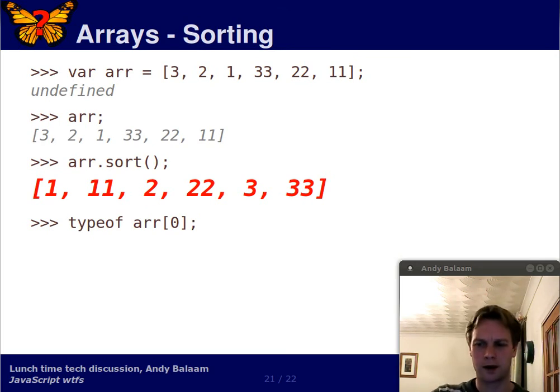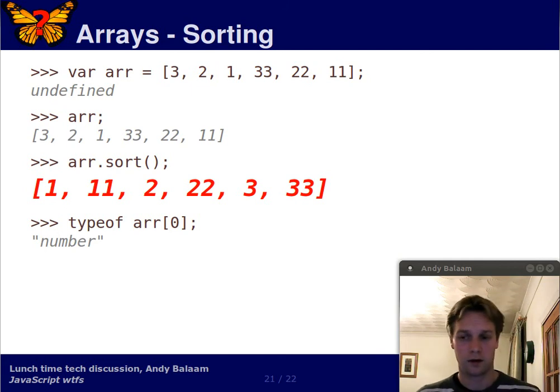So, maybe this can be explained because arrays only ever contain strings. Right? Maybe that's it. So, what's the type of the first thing in this array? Well, the type is number. This thing is a number. That number 1 there, it is a number.